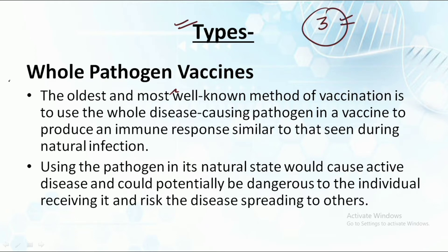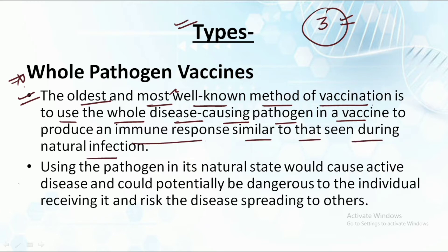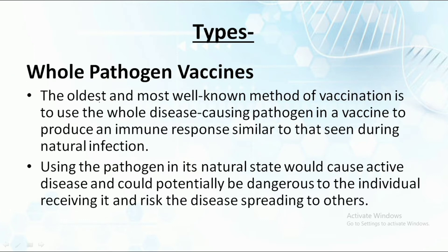There are three major types of vaccines. The first is the whole pathogen vaccine, which is the oldest and most well-known form. It uses the pathogen in its natural state to produce an immune response similar to that seen in actual infection. However, using the pathogen in its natural state could cause active disease and be dangerous to the individual receiving it. The risk of spreading to others is also high, making it the least used type.